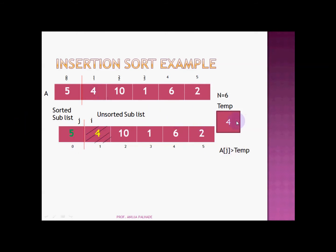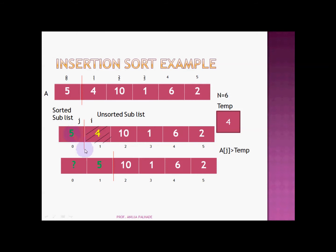Now we pick an element from the unsorted sublist and put it into temp. Let's say we pick 4 and put it into the temp variable. We compare A[J] with temp. A[J] is greater — yes, 5 is greater than 4 — so we shift that greater item one place to the right. We shift 5 to index 1, leaving index 0 empty. We have already reached index 0, so our comparisons are done. Now put the temp item at this location. This is now the sorted sublist, and our virtual partition shifts forward.